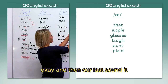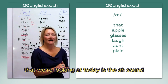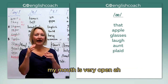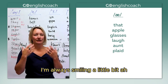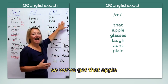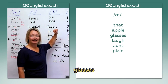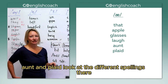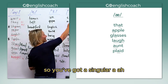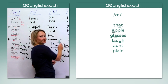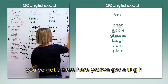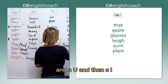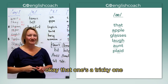Our last sound we're looking at today is the ah sound. Look at my mouth and my face — my mouth is very open, almost smiling a little bit: ah. So we've got: apple, glasses, laugh, ant, and plaid. Look at the different spellings — a singular A in 'apple,' A in 'glasses,' A-U-G-H in 'laugh,' A in 'ant,' and A-I in 'plaid.' That one's a tricky one.